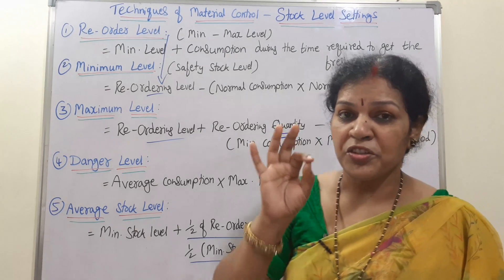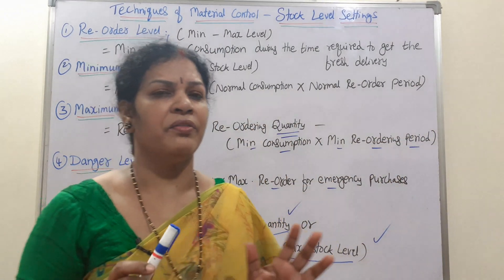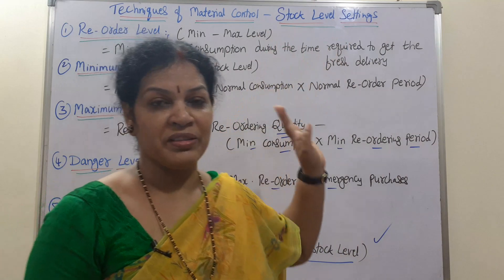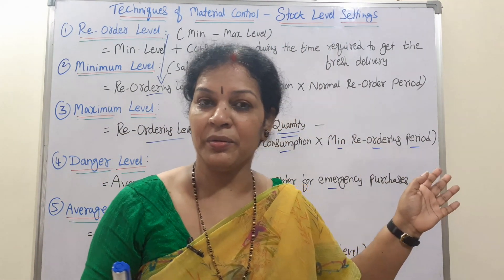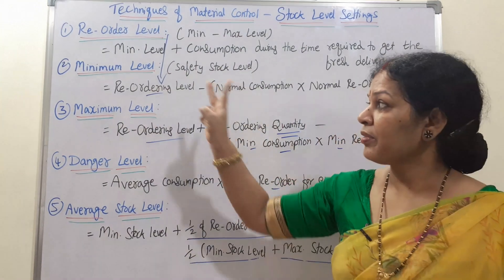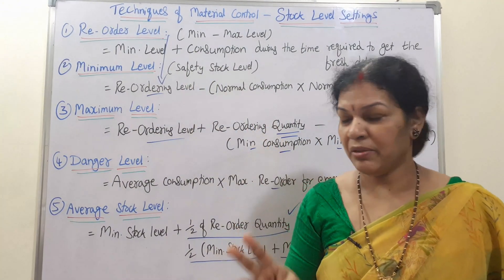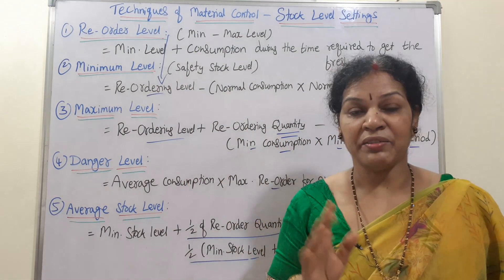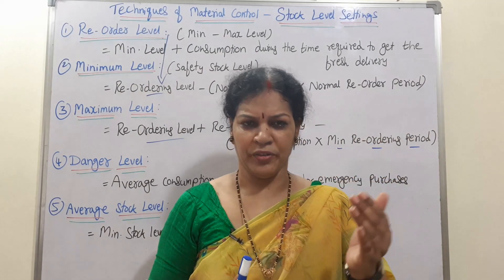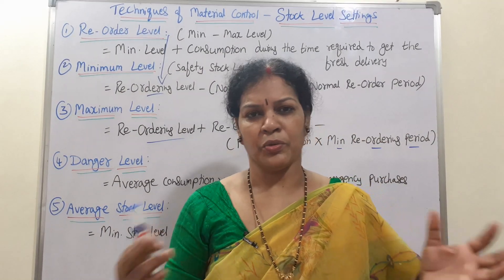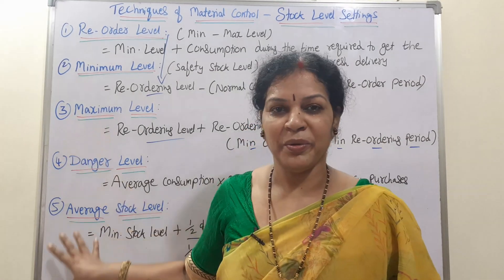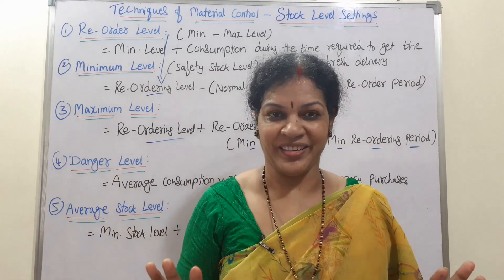This is the first way to control material — stock level settings. In total, there are 5 stock level settings: reorder level, minimum level, maximum level, danger level, and average stock level. Based on these, you will find a few problems in your textbook. Check them out and start working through the problems using the formulas to understand them.